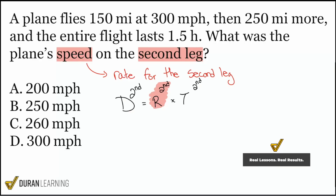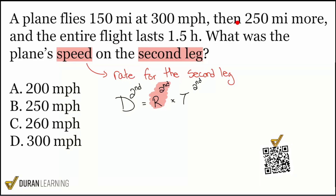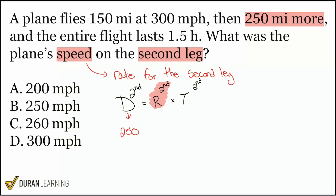A plane flies 150 miles at 300 miles per hour, then 250 miles more — that's all it says about the second leg. So 250 miles is my distance; I'll plug that in here. We are not given the time for the second leg — instead we are given the time for the whole flight. Do we notice that?